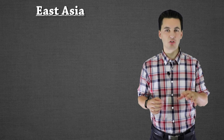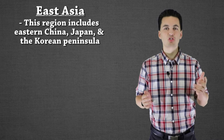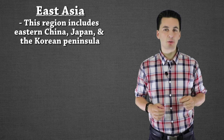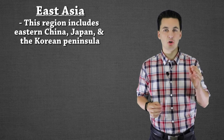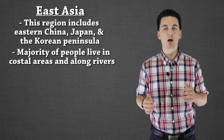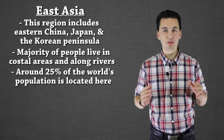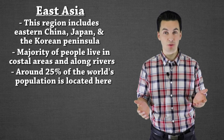Our first population cluster is East Asia. This is a perceptual region, and some examples of countries that fall under here would be China, the Korean Peninsula, and Japan. The majority of people here actually live on the coastlines, and we also have some people — especially in China — living alongside the rivers. Over 25% of the world lives in this region.